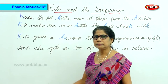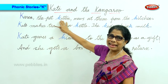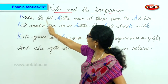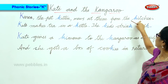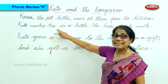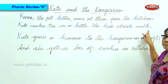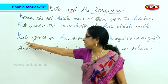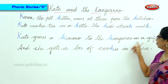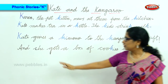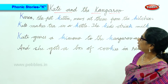So there is the dog from the kennel — he is barking because he wants to join them. Now Karen the pet kitten says meow at them from the kitchen. Kate makes tea in a kettle. The kids drink the milk. Kate gives a kimono — a Japanese dress — to the kangaroo as a gift, and she gets a box of cookies in return.